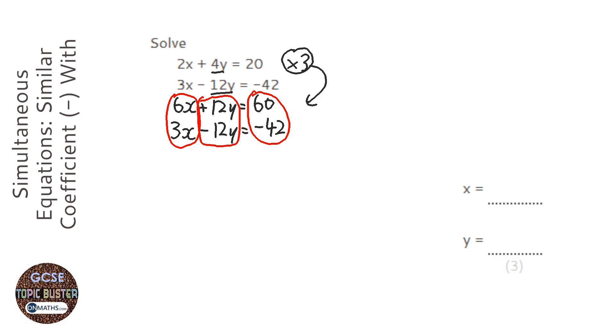If the signs of the coefficients are the same, we subtract. If they're different, we add. Now looking at this, we've got 12y and minus 12y. So they're different, so we're going to add.